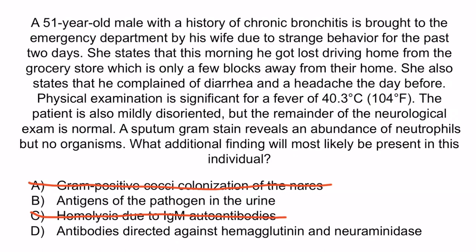Finally, D is incorrect because this is a reference to influenza. Recall that influenza has surface glycoproteins called hemagglutinin and neuraminidase that allow it to enter and leave the host cell. However, this typically presents with a cough, rhinitis, a headache, and myalgias. The diarrhea, neurological symptoms, and gram stain which revealed an abundance of neutrophils also make this answer choice unlikely. So the correct answer is B — antigens of the pathogen in the urine. And with that, we've covered everything you need to know about Legionella.